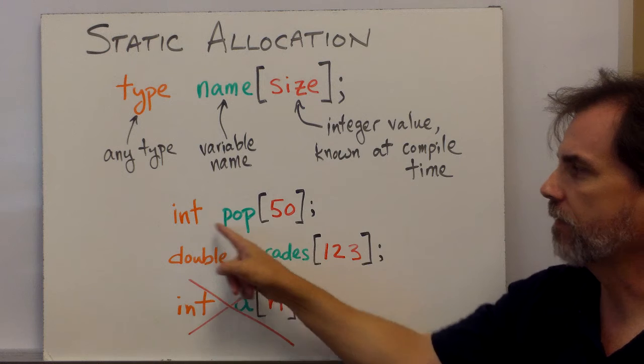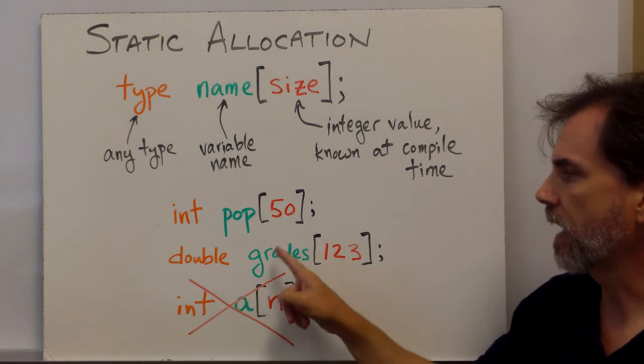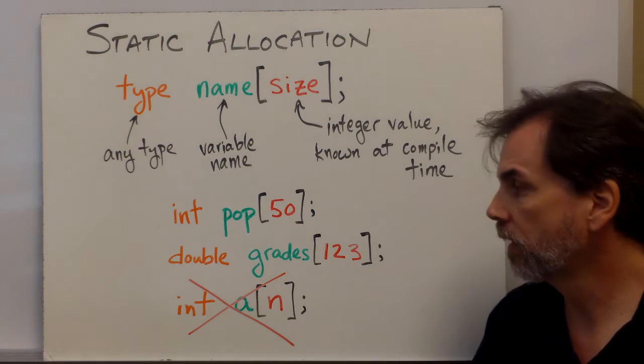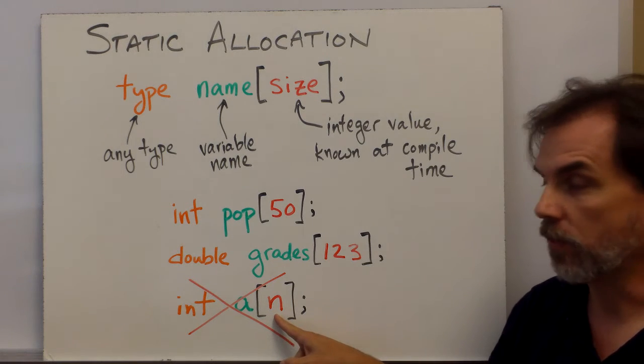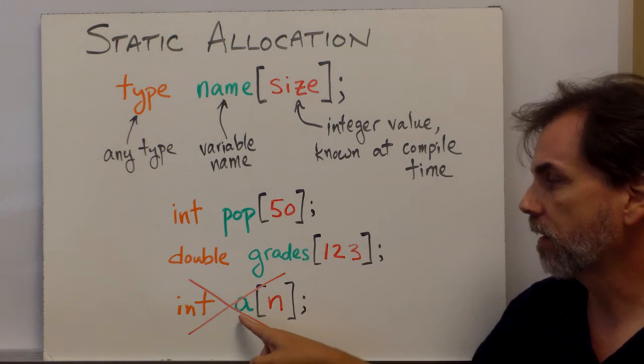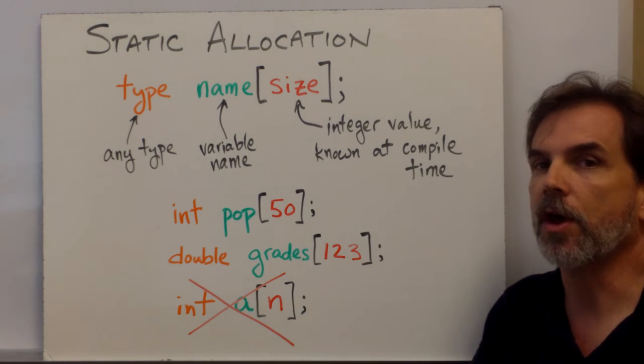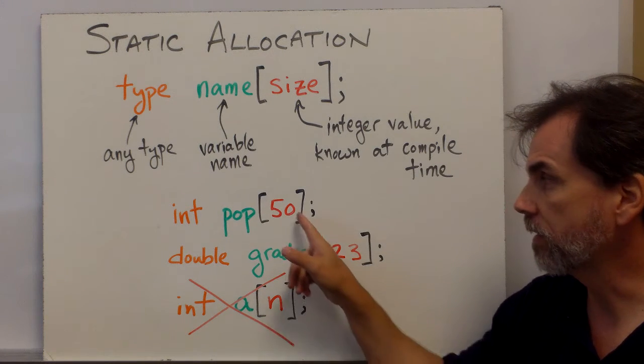And so here's some examples. Pop is an array of integers of 50 integers. Grades is an array that has 123 elements, and each of them is a double. What we can't do is something like this, where n is a variable. We can't allocate an array, a, of n integers because the compiler doesn't know what the value of n is. So this is not allowed. These are allowed.